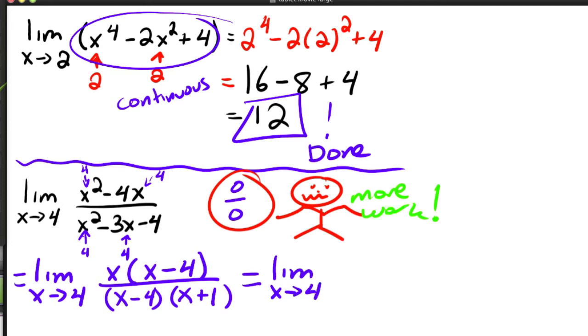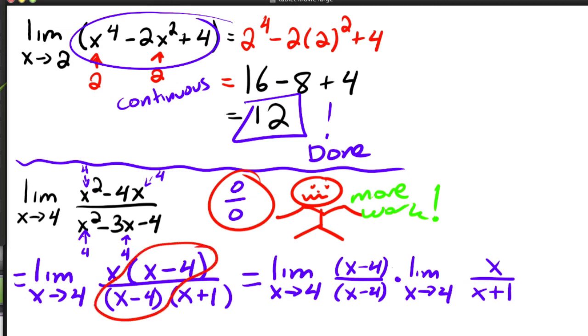But basically, what we've got is this is equal to the limit as x approaches four of x minus four over x minus four times the limit as x approaches four of x over x plus one. So the only thing I did is I used the limit laws to break this up into the product of the limit of this guy, which is this first one, and then the limit of this one over this one, which is this guy right here.